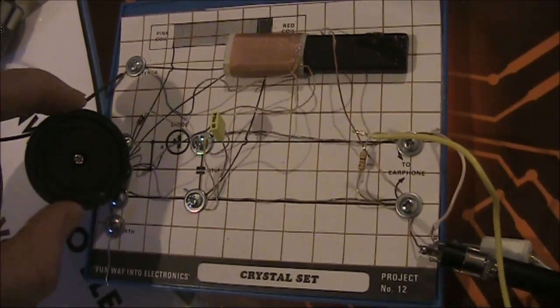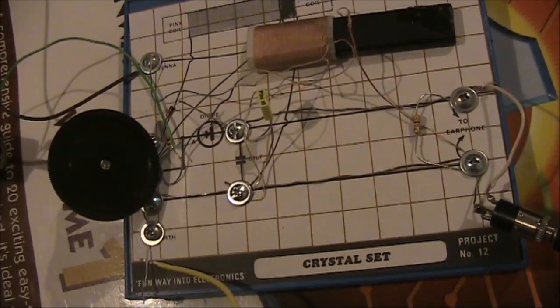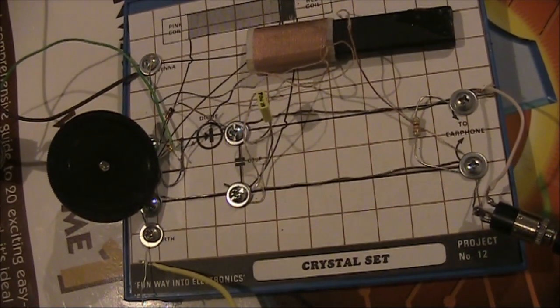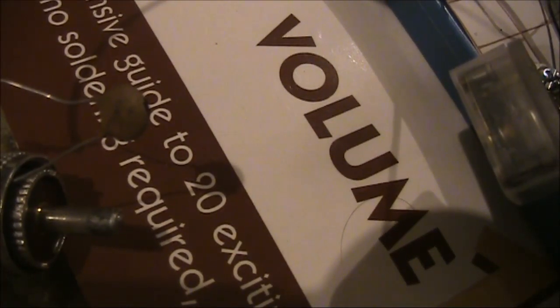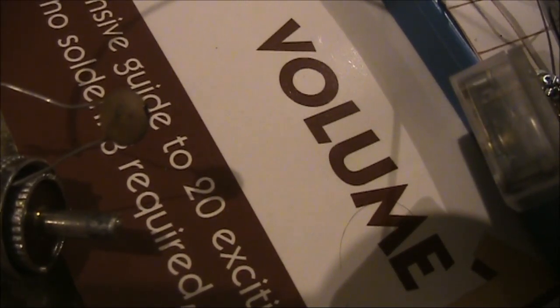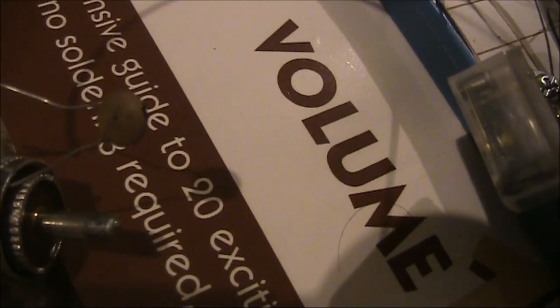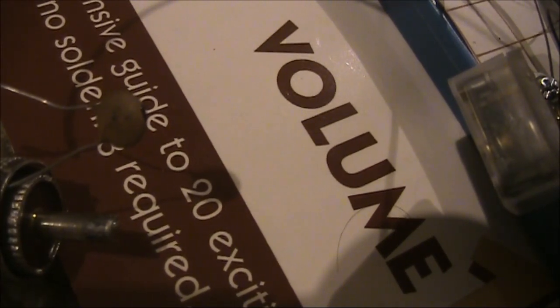The set was working, but the stations were all jumbled together and it was hard to separate them. If you are in an area with many stations and have that problem with poor selectivity, with the antenna and earth connected, one approach is to loosen the coupling between the antenna and the crystal radio.